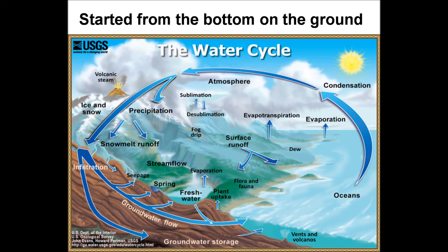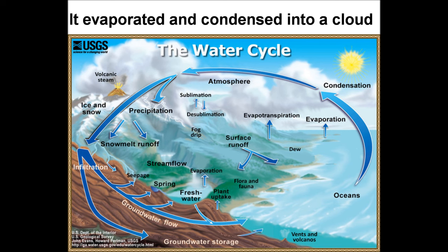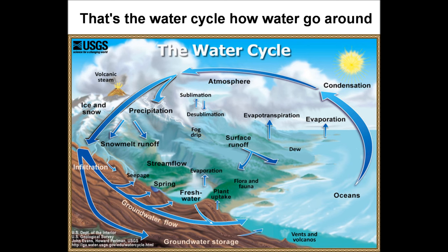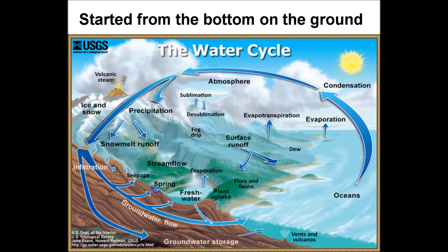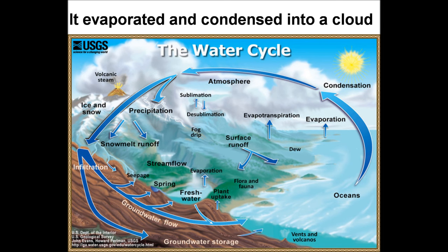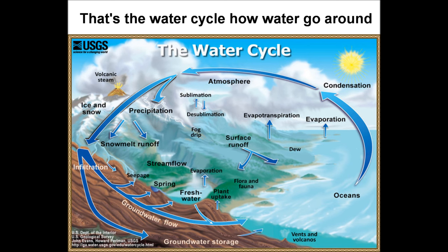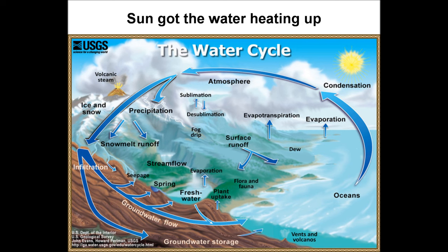Started from the bottom on the ground, it evaporated and condensed into a cloud. Now precipitation falling down — that's the water cycle, how water go around.